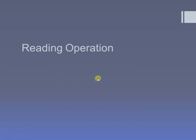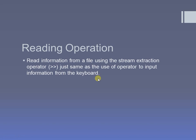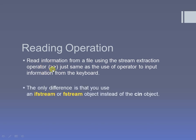This is an input function where we take input from the file. To perform the read operation, we use the extraction operator, just as in cin with the iostream object — except instead of taking input from the keyboard, we are reading from the file. To access this extraction operator, we need the object of the ifstream class, which is the stream useful for performing read operations. So instead of using the cin object, we use the object of the ifstream class.